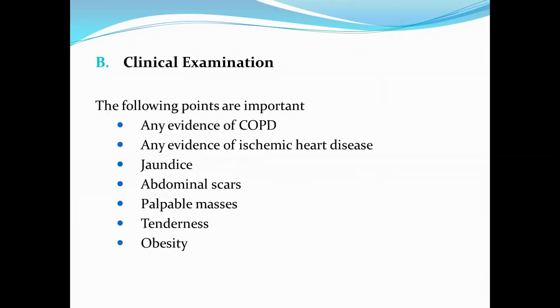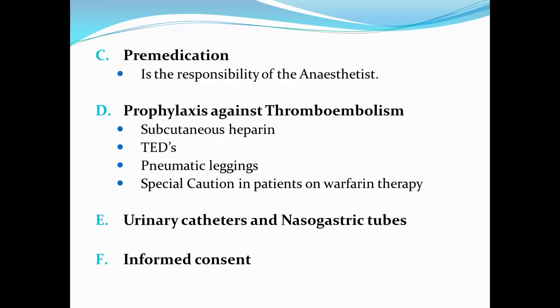Clinical examination of these patients: the following points are very important. You must look for any evidence of chronic obstructive pulmonary disease, you may need an x-ray of the chest. Evidence of ischemic heart disease, you may need an ECG. Presence of jaundice. You must very carefully examine for abdominal scars, palpable masses in the abdomen, any tenderness over the abdomen, and obesity. Special record has to be made of these points on examination.